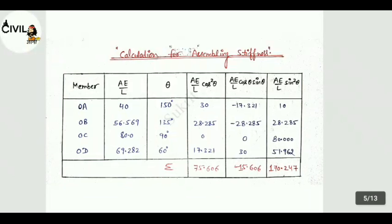Now AE/L cos theta, means theta value put. AE/L value put. So value is equal to AE/L cos theta is equal to minus 60.247. When we submit AE/L cos squared theta, value is equal to 75.606. And when we submit AE/L sin squared theta, value is equal to 15.606. And when we submit AE/L cos theta, value is equal to 17.247.